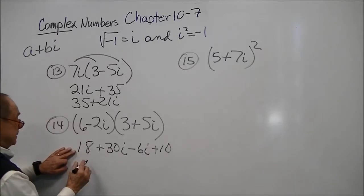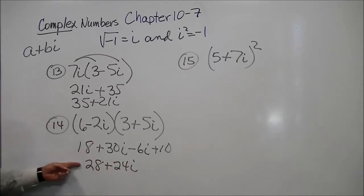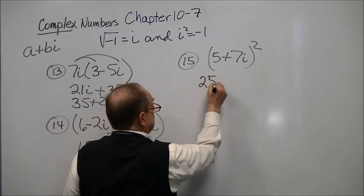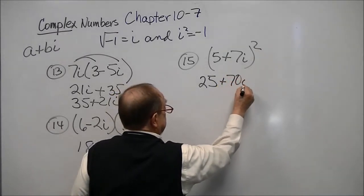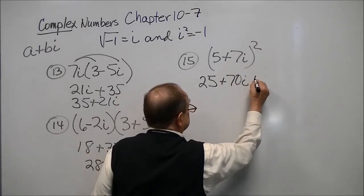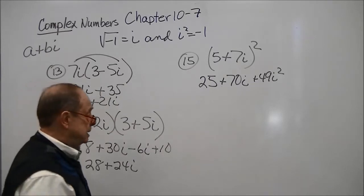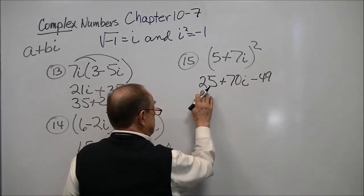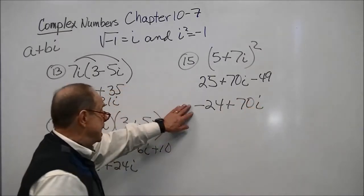Adding the real parts together gives 28, and adding the i terms gives positive 24i — now in standard form. This next one uses the special squaring technique: square the first term, multiply the two terms and double it to get 70i, then square the last term. What do we know about i squared? It's negative one, so the last term becomes negative 49. Negative 49 plus 25 gives negative 24, plus 70i — now in standard form.